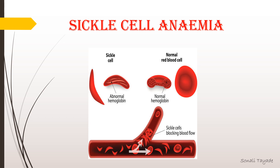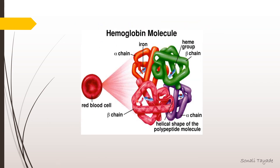Why does the RBC become sickle-shaped? The reason is a point mutation in the beta-globin gene of hemoglobin. Hemoglobin is the protein found in red blood cells that carries oxygen from the lungs to the rest of the body. Hemoglobin is made up of 4 polypeptide chains: 2 alpha-globin chains and 2 beta-globin chains, each containing iron, which is the oxygen-binding site. In sickle cell anemia, the gene responsible for the synthesis of the beta-globin chain has a mutation, and as a result, normal hemoglobin molecules are not formed.